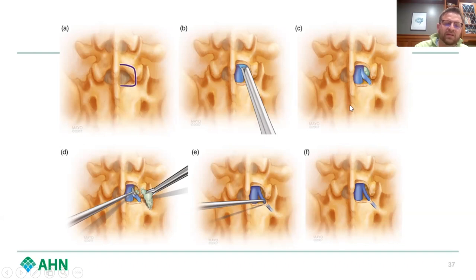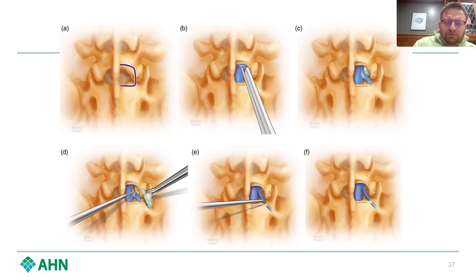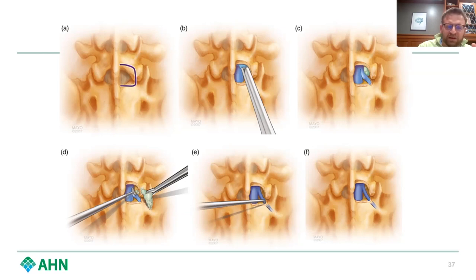You can see in surgery, especially when observing these procedures, look at the nerve root before and after removal of the herniated disc. It's often very deformed before surgery — kind of pushed up or displaced. After you take the disc herniation out, it relaxes back to its natural position.